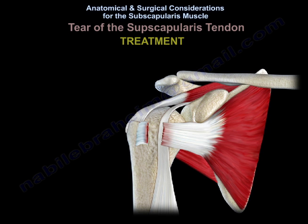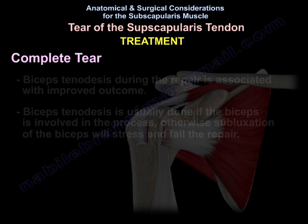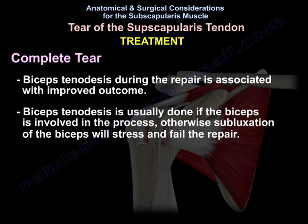Treatment of a complete subscapularis tendon tear requires surgical repair, which may be either open or arthroscopic. Biceps tenodesis during the repair is associated with improved outcomes and is usually performed if the biceps is involved. Otherwise, subluxation of the biceps will stress and fail the repair.